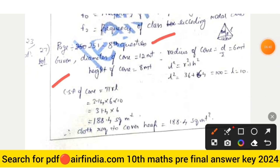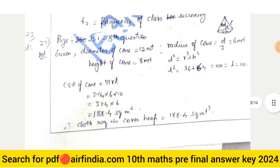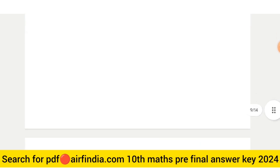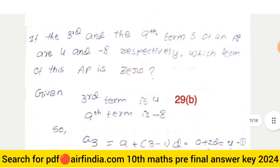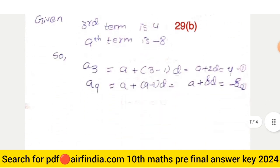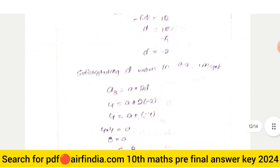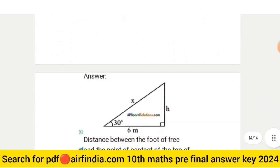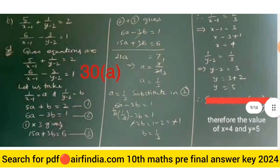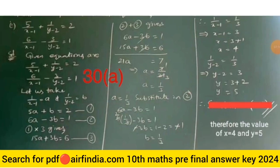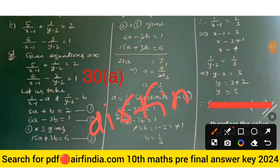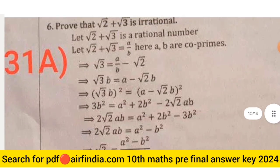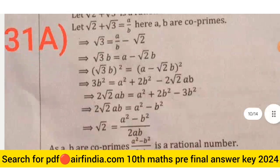Question twenty-seven involves the curved surface area (CSA) of a cone: CSA = πrl, given the diameter. Question twenty-nine B: the fifth term of the given AP is 0. Question thirty A answer is provided. Question thirty-one: √2 + √3 is irrational — this is your answer.